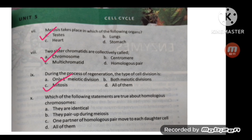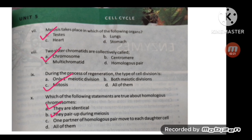Which of the following statements are true about homologous chromosomes? They are identical; they pair up during meiosis one; one partner of a homologous pair moves to each daughter cell. All options are correct, so the correct option is all of them.